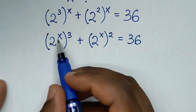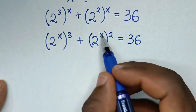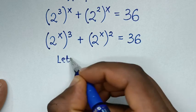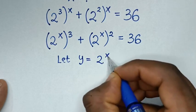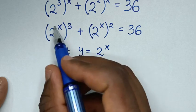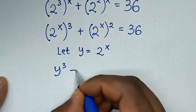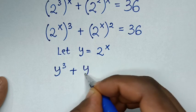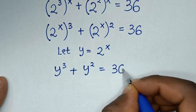Then in the next step, 2 power of x is common. So we'll let y equal to 2 power of x. Then it will be y cubed plus y squared is equal to 36.